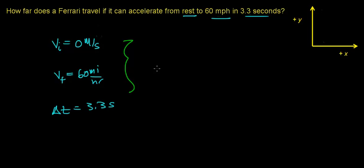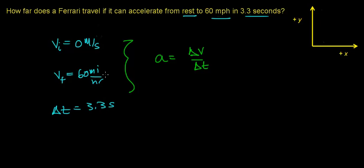One of the things we need to know is the acceleration of the car. Remember, acceleration is how fast the velocity changes — mathematically, it's the change in velocity per change in time. Before we can find the acceleration, we need to have consistent units. We need to convert 60 miles per hour to meters per second so our units of velocity are consistent.